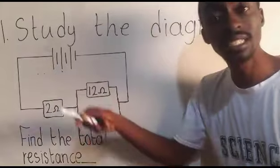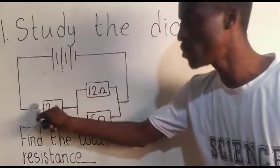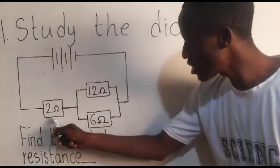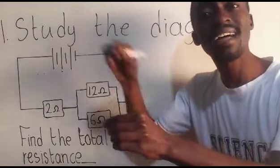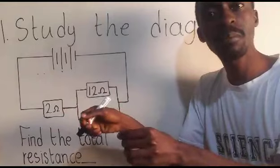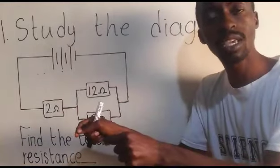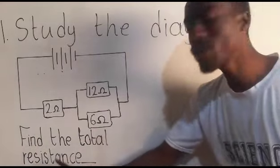Now these things you are seeing, these lines here represent the cells or the batteries. This line you are seeing represents the wire or the media. These components you are seeing are what you call the resistor. They are the ones responsible for resistance. To resist simply means to reduce the flow. Now what is the question saying here? Find the total resistance.